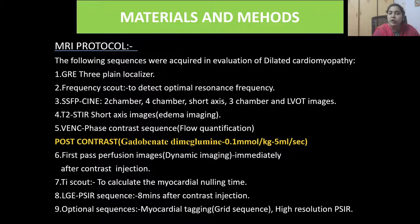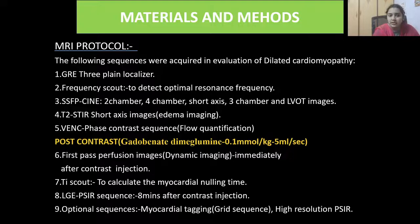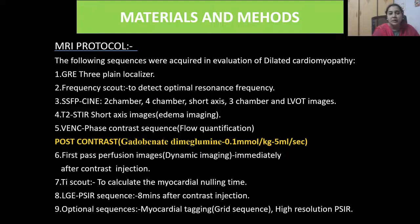MRI protocol: sequences used included GRE three-plane localizer, frequency scout to detect optimal resonance frequency, steady-state free precession (SSFP) cinematic two-chamber, four-chamber, short-axis, three-chamber, and LV outflow tract images. T2 STIR short-axis images were used to detect myocardial edema. Phase contrast sequence was taken to determine flow quantification. Post-contrast, gadobenate dimeglumine 0.1 mmol/kg at 5 ml/second was given. First pass perfusion dynamic imaging was performed immediately after contrast injection. A TI scout was used to calculate myocardial nulling time, and the LGE-PSIR sequence was performed 8 minutes after contrast injection. Optional sequences included myocardial tagging, grid sequence, and high-resolution PSIR.